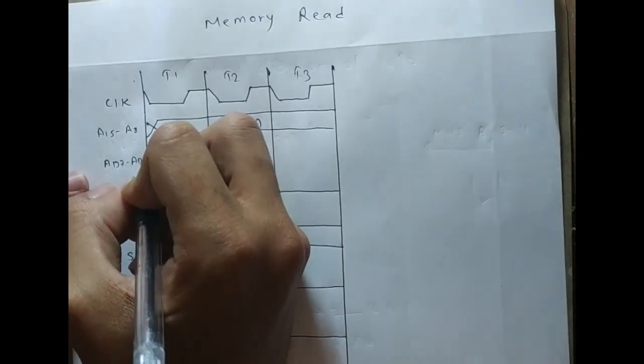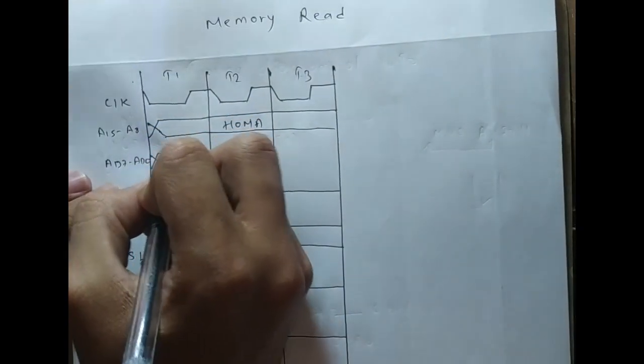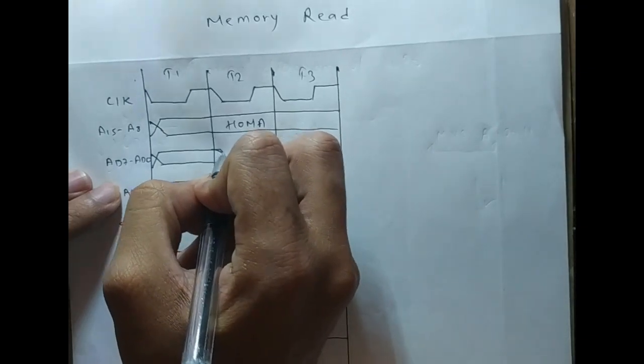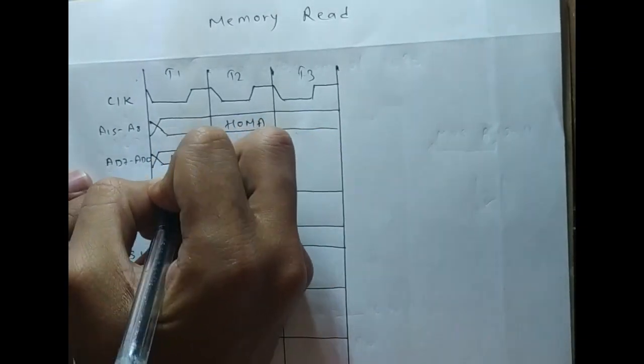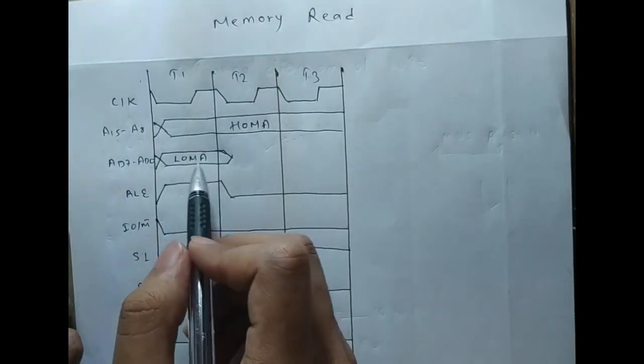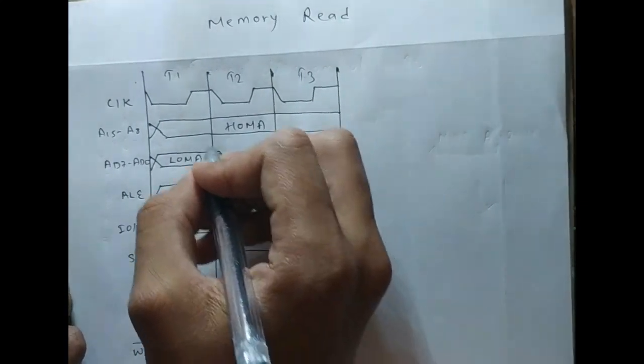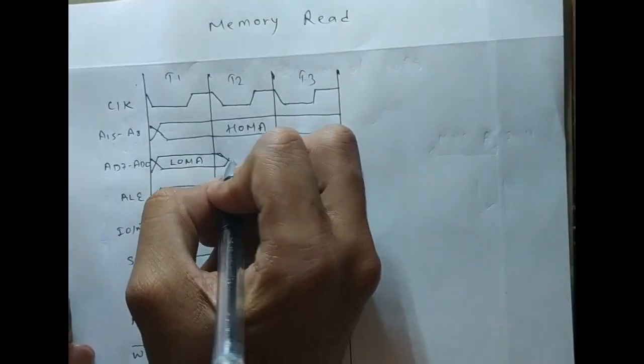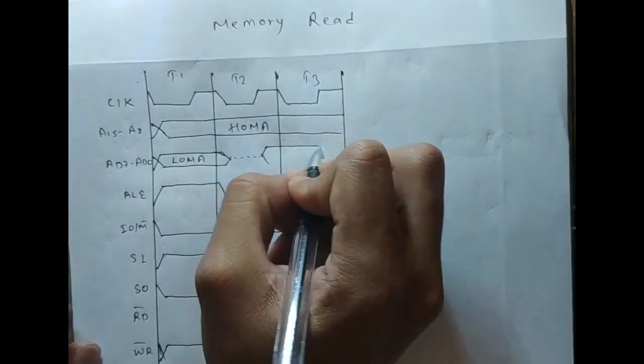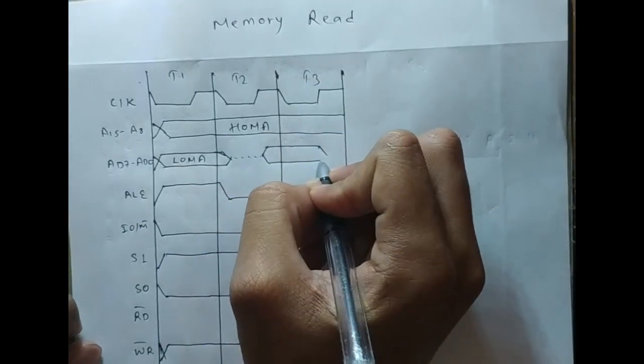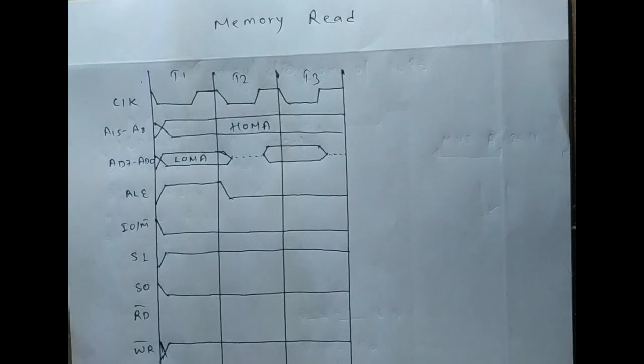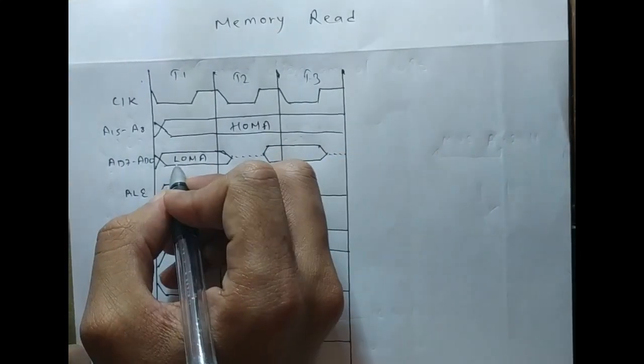At first this bus will carry lower order memory address. Since this is a multiplexed bus, at first it will carry the address, and after it points to the memory location it will act as data bus. In this part it will act as the data bus, and in this part it will act as the address bus.